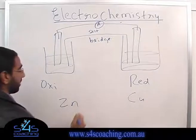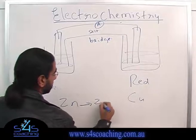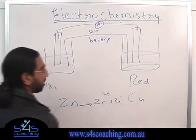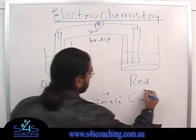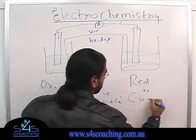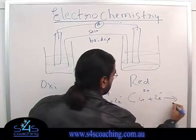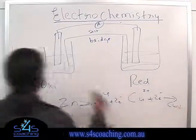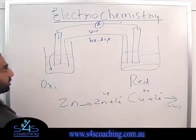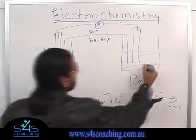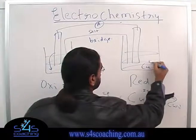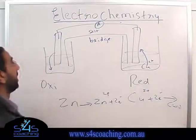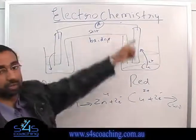So zinc will undergo oxidation and copper will undergo reduction. Zinc is going to lose electrons and go into the solution, and the copper from the solution is going to come up and deposit here, with electrons flowing through.